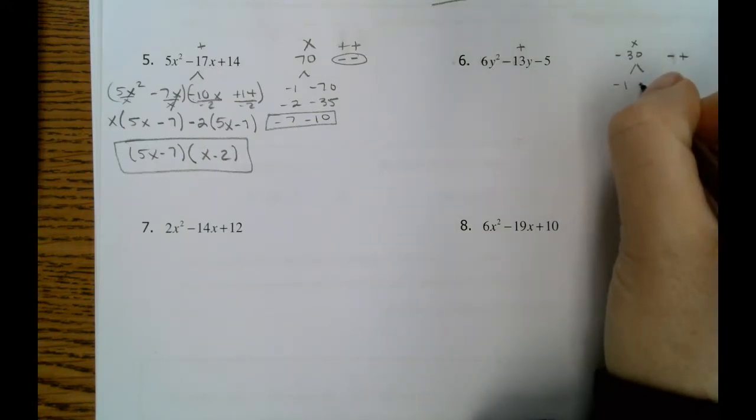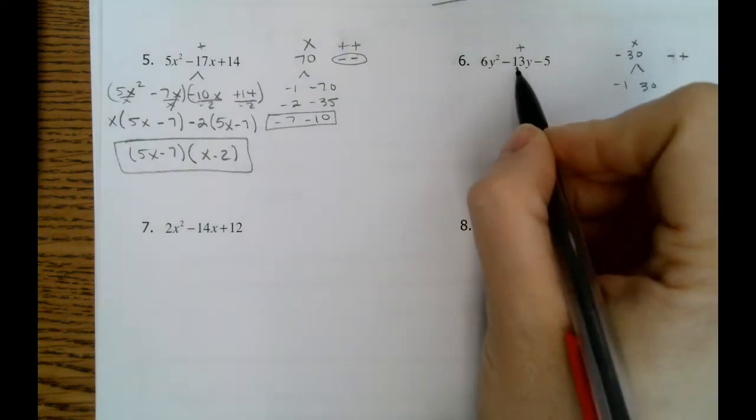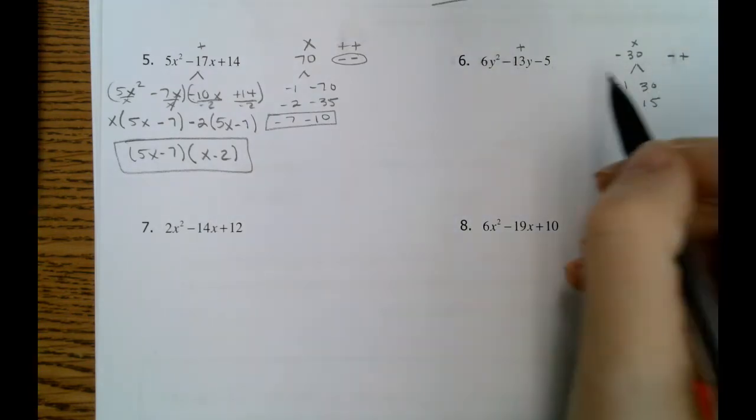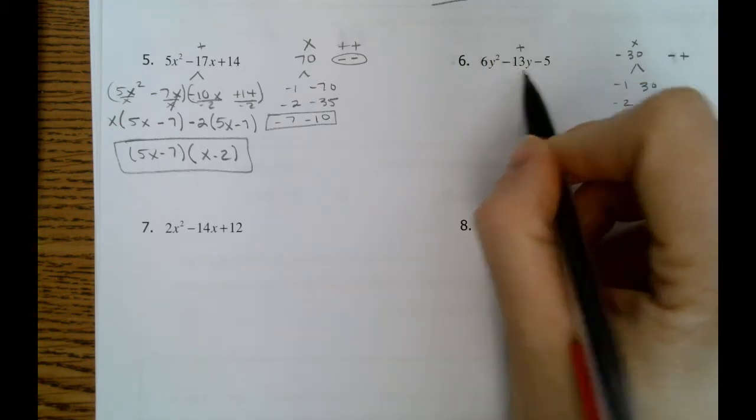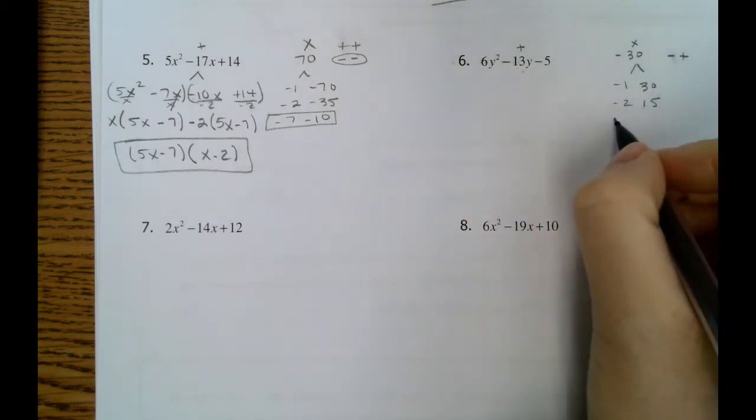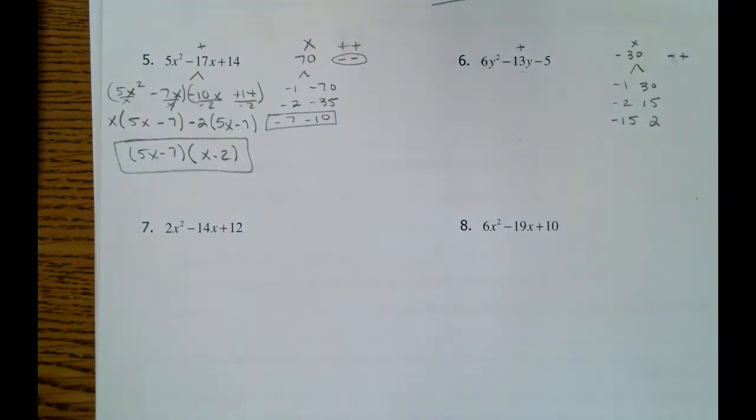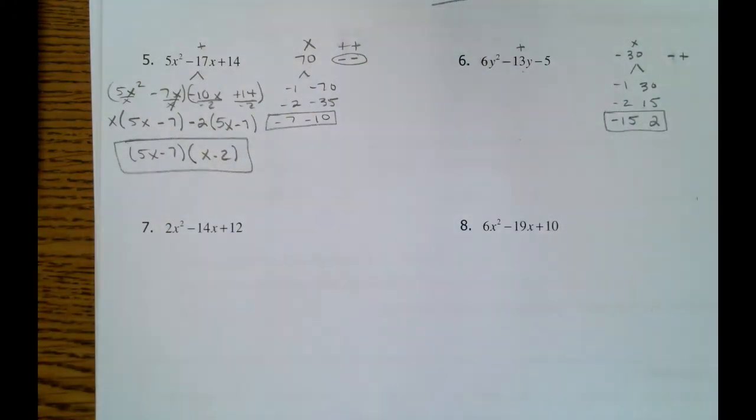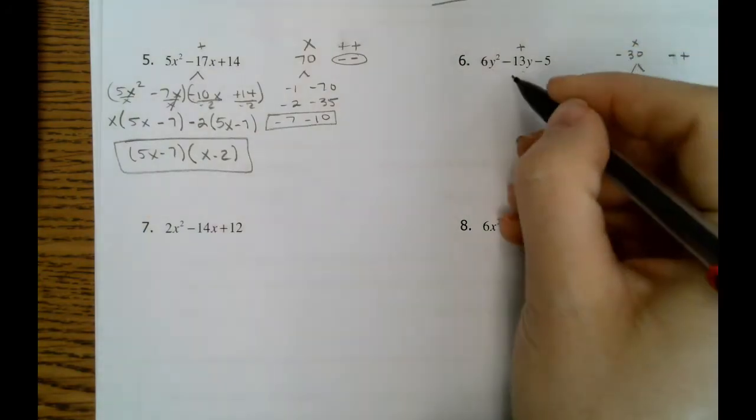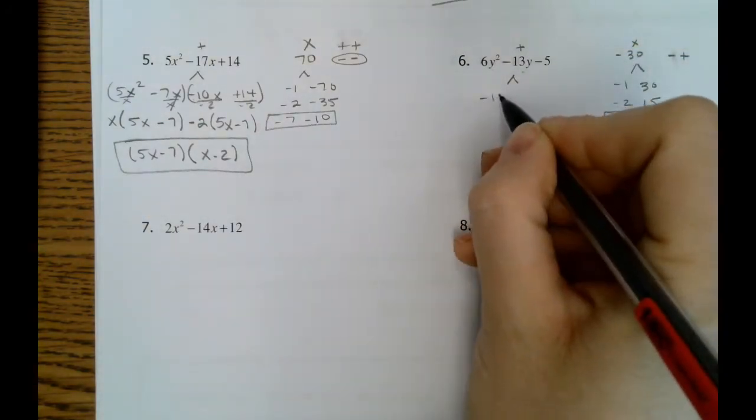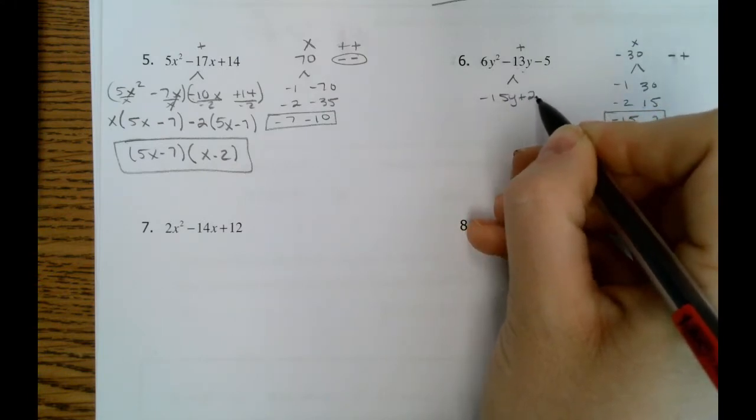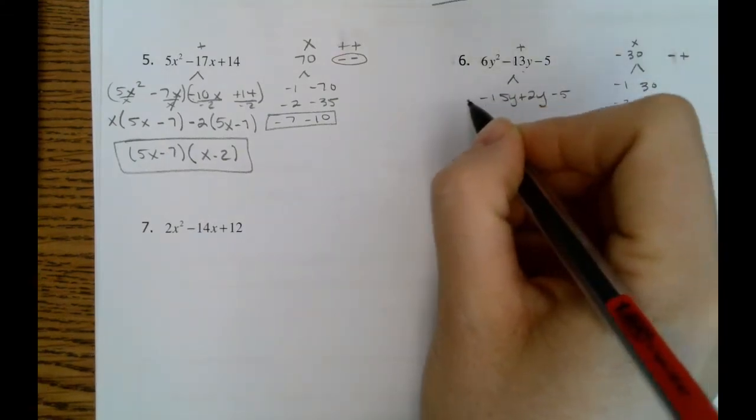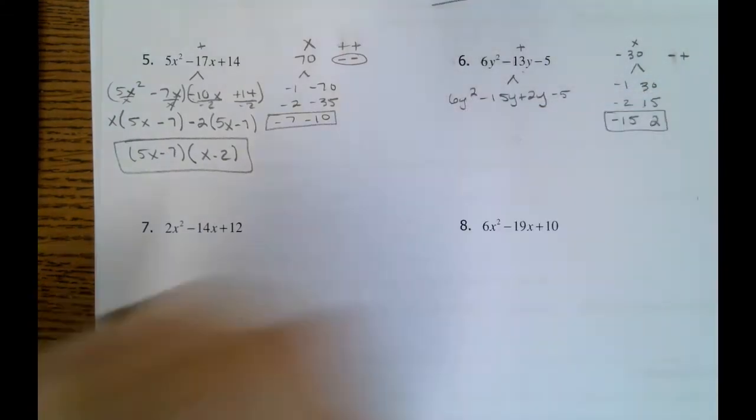So we will need a negative and a positive number here. So negative 1 and 30 don't add to negative 13. Negative 2 and 15, those don't add to negative 13. That adds to positive 13, but we could try negative 15 and positive 2. That would get us there. Negative 15 and positive 2 would get us there. So we'll split our middle term into negative 15y plus 2y. Keep our ends. So keep the negative 5. Keep the 6y squared.